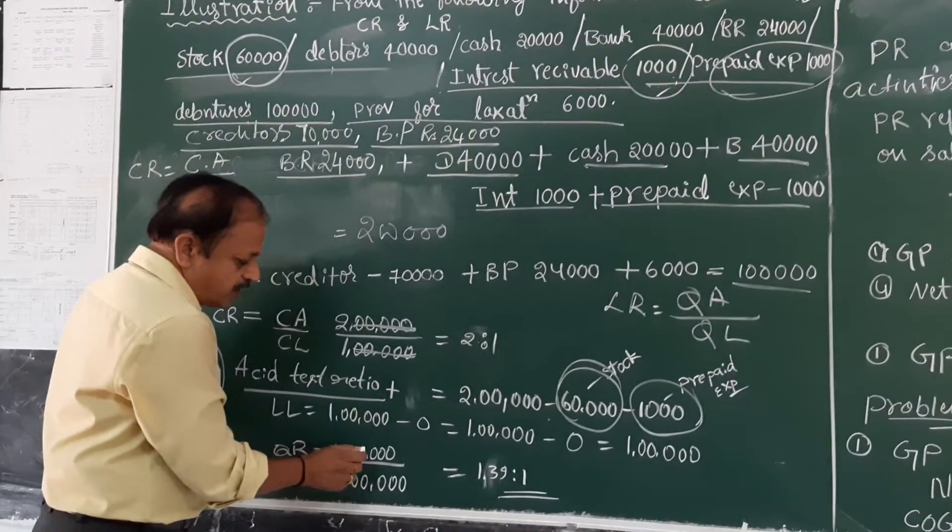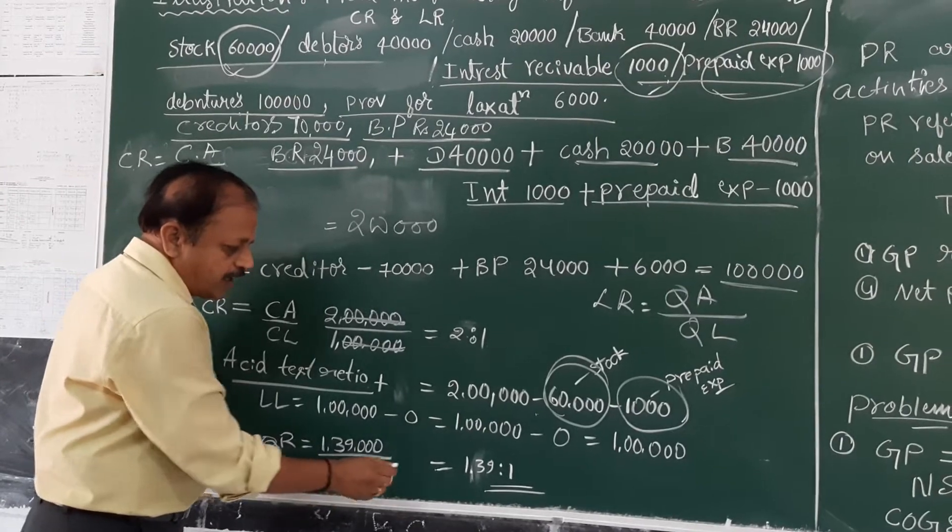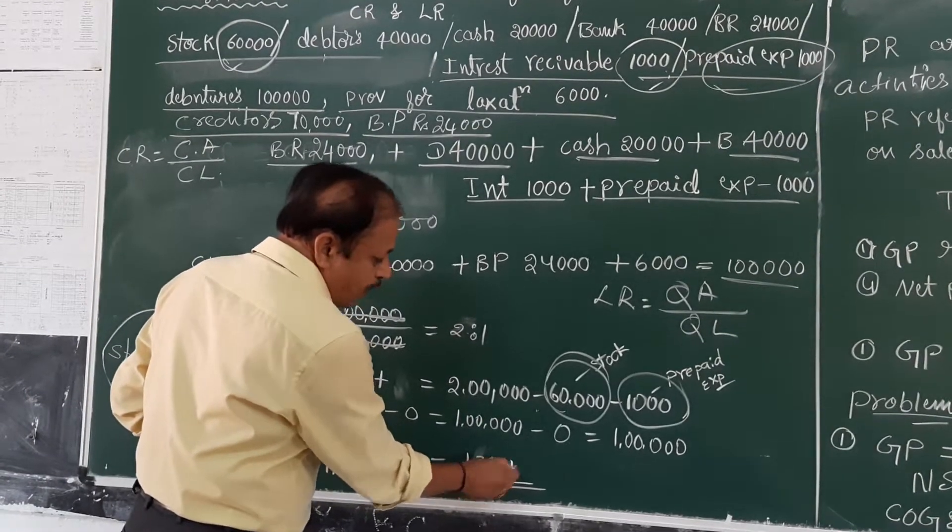Divide 1 lakh 39,000 by 1 lakh, we get 1.39 is to 1.